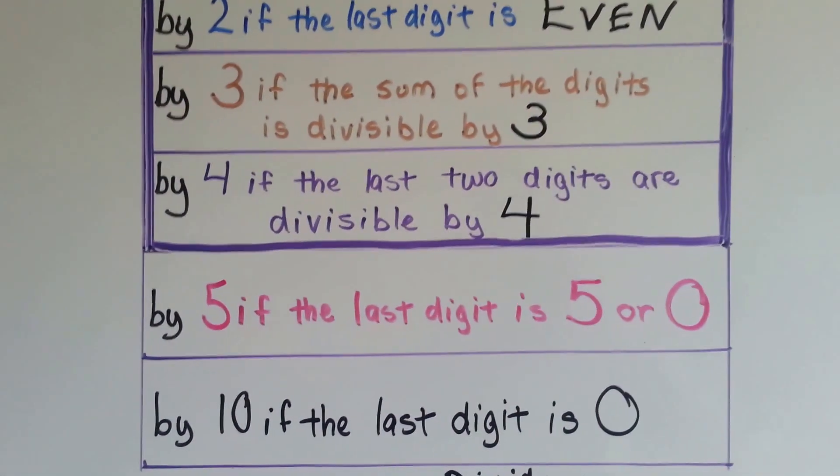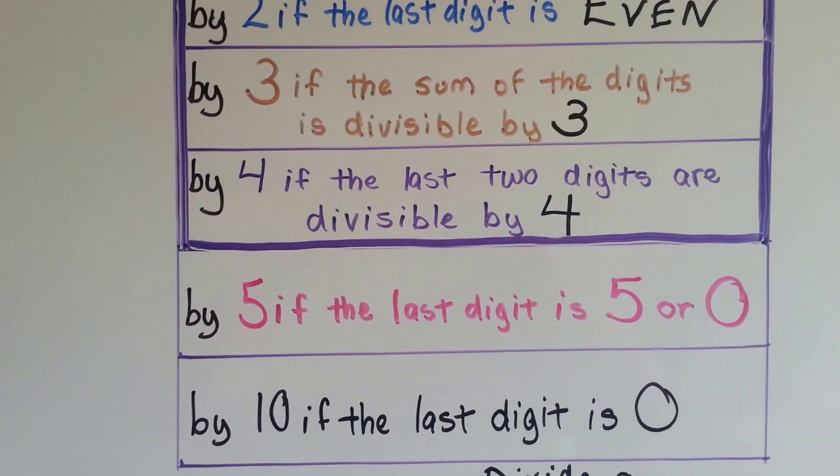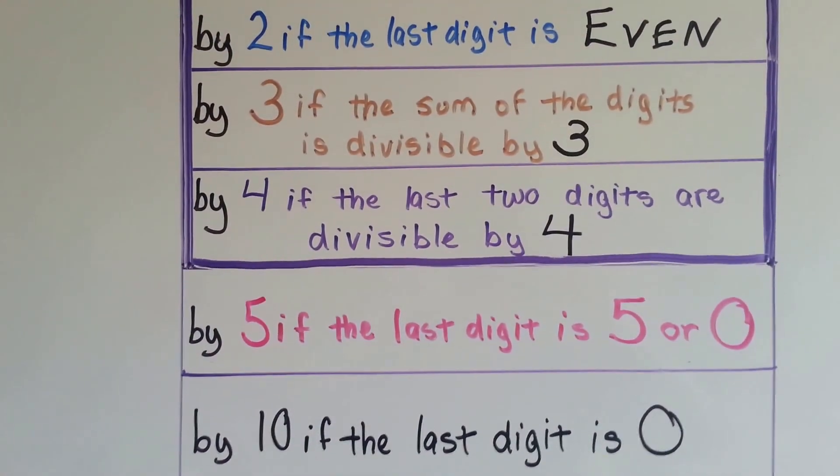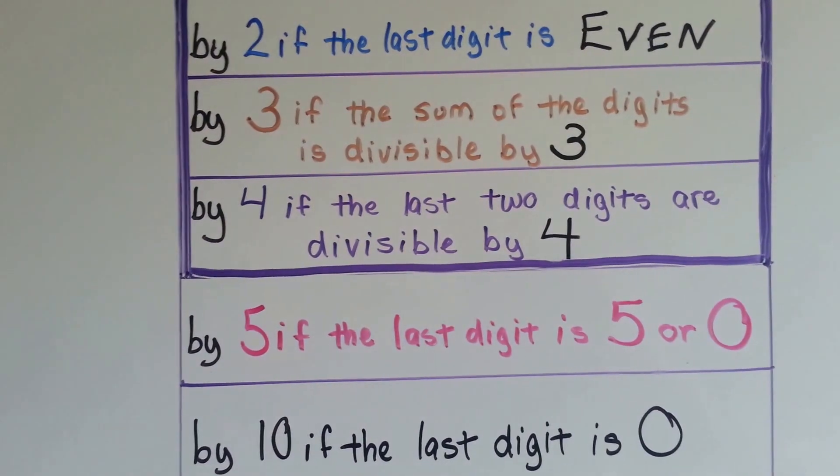We know it's divisible by 10 if the last digit is a 0. 10, 20, 30, 40, 50, 60. Those are all divisible by 10. They all end in a 0.